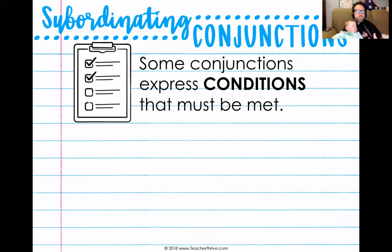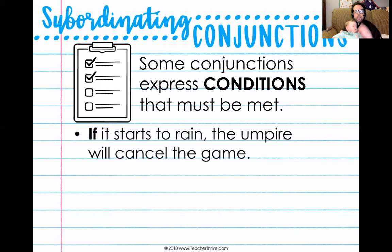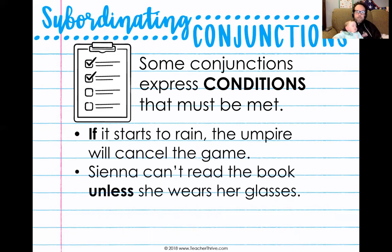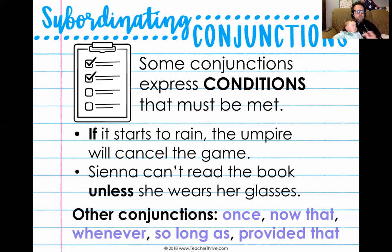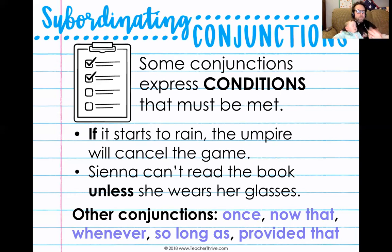Some conjunctions express conditions that need to be met — like if this, then that. If it starts to rain, the umpire will cancel the game. Sienna can't read the book unless she wears her glasses. You may have noticed that some of these conjunctions fit into more than one category. Like if also tells time, once also tells time, whenever tells time. You're correct, because some of these conjunctions can work in more than one category depending on how they're being used.